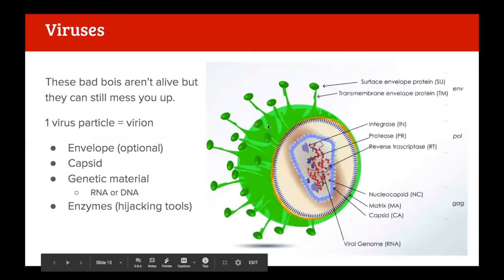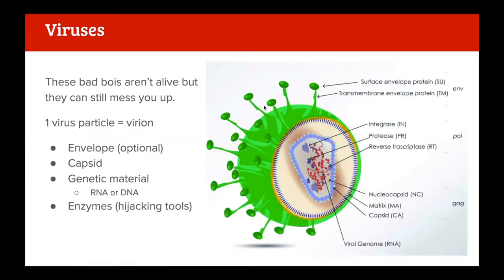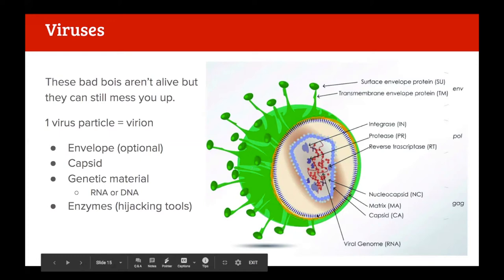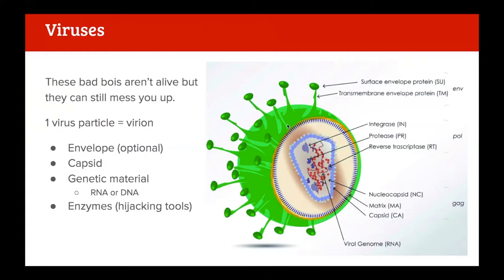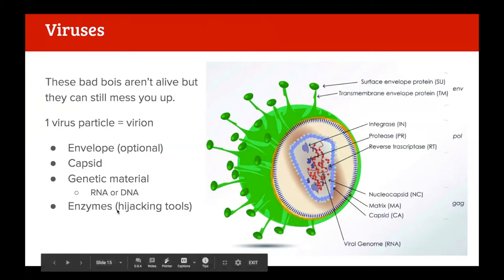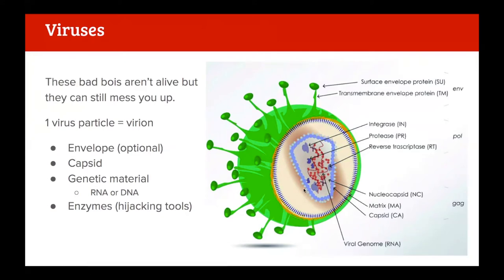Now let's look at viruses. They're not alive but they can really mess you up. One virus particle is called a virion, composed of a few main anatomical features. An optional outer layer is the envelope - if present, it communicates between the virus and the host cell. Then there's the capsid, which contains the virus's genetic material. If no envelope is present, the capsid communicates directly with the outside world. Viruses can have either RNA or DNA, which determines different replication strategies. Inside the capsid are enzymes that act as tools to help the virus hijack cells.